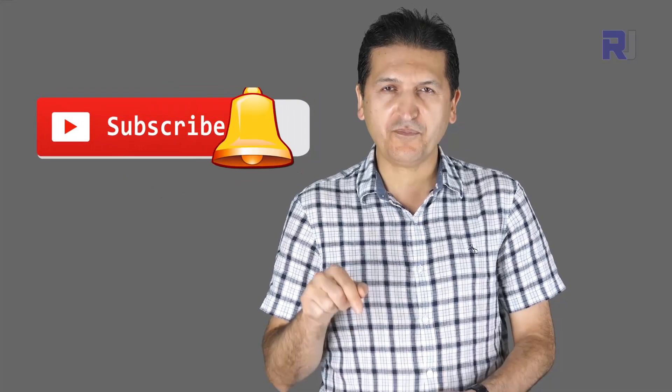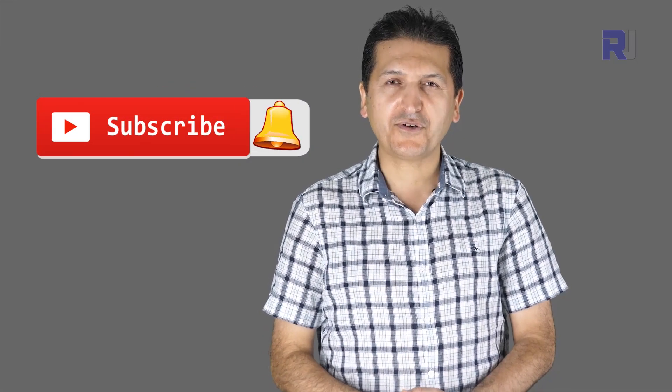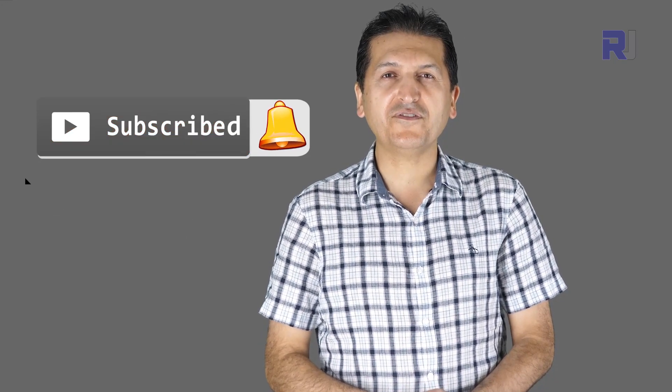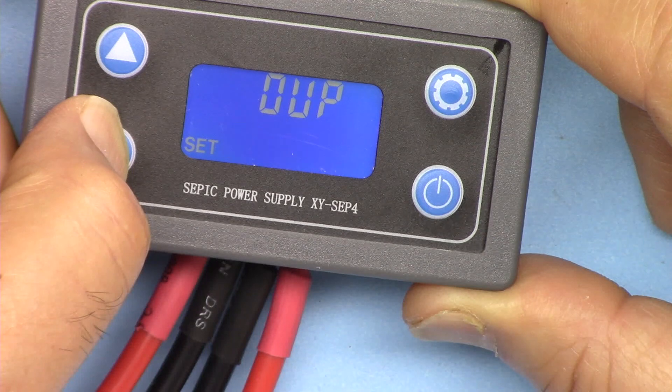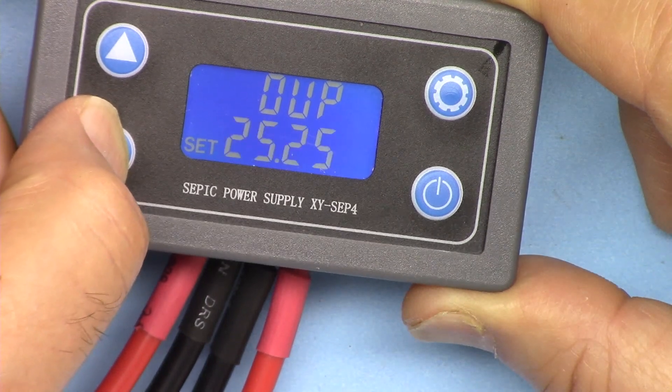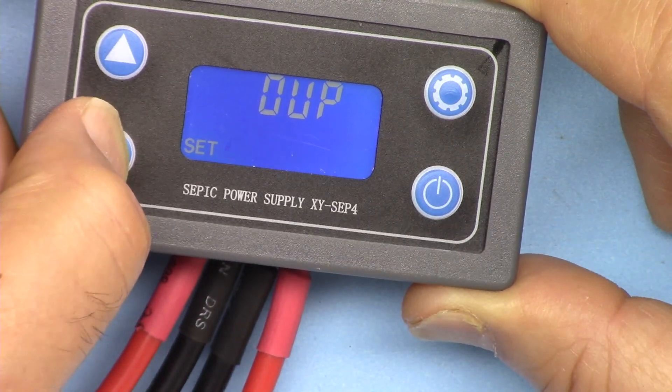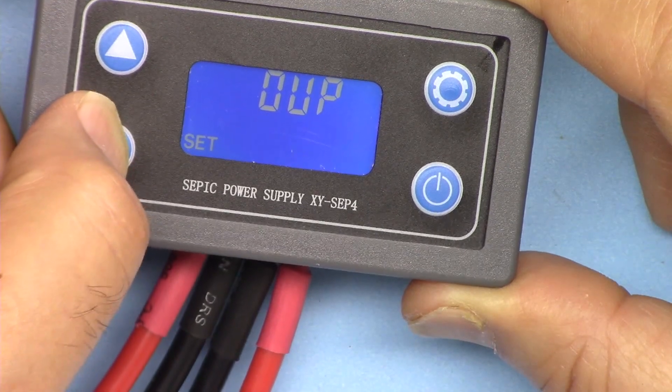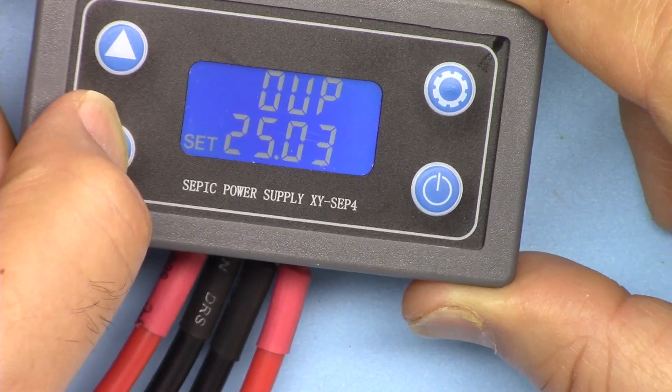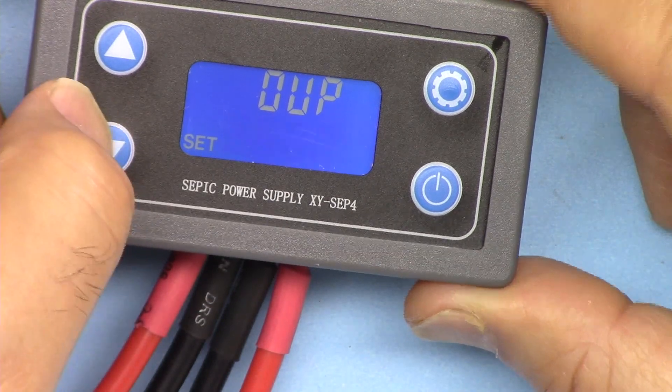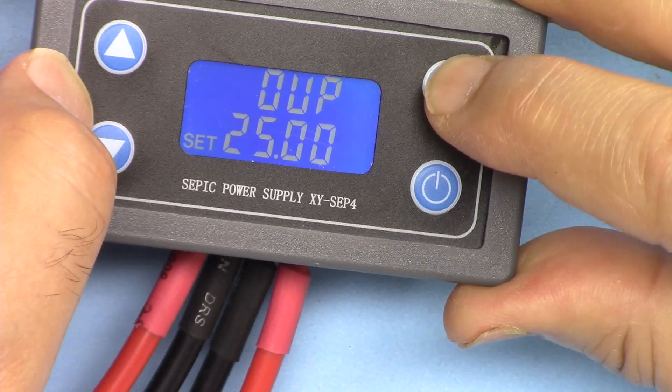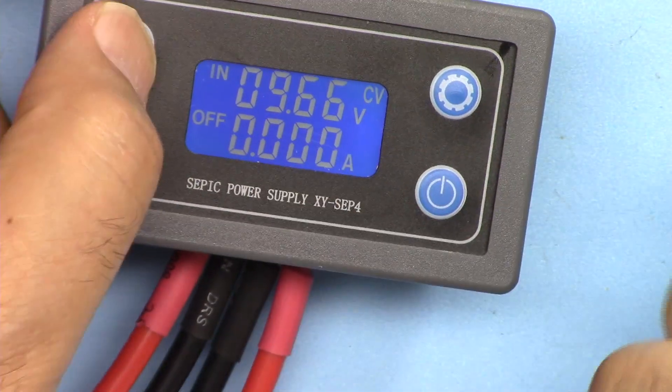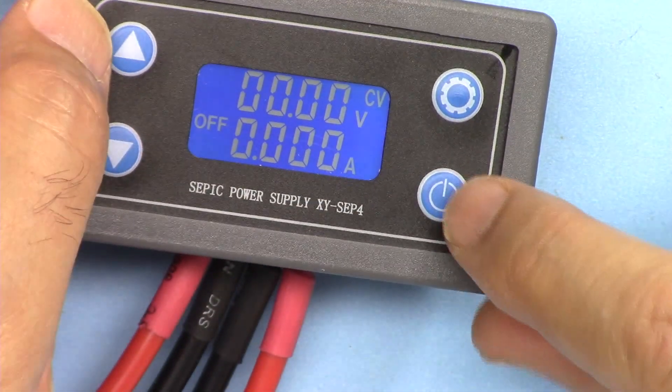If you have a comment or question, post it in the comment section below. I try to answer and reply. If you want to get updates of my upcoming videos, make sure to subscribe. Now I've set it to 25 volts. Let's hold it for two seconds. This is the input. Output is currently zero.